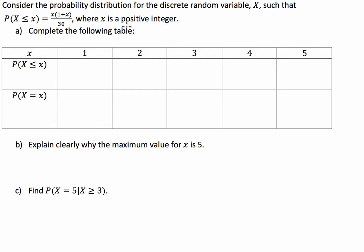For part A of the question, they're asking us to complete this table here where we've got the values of x across the top and the probabilities of the variable being less than x and the probability of the variable being equal to x.